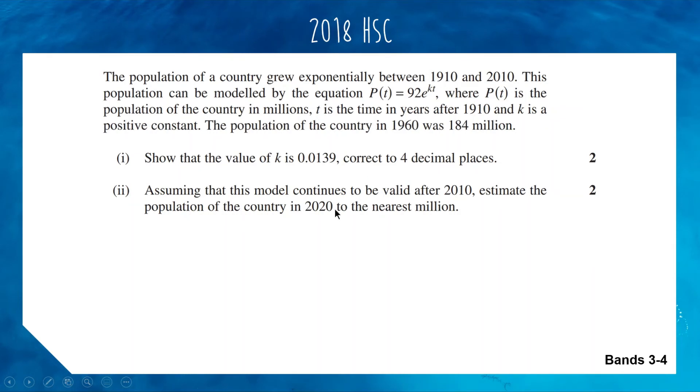We've got our function. We have 92 e to the, we have our value of k, and our value of t is going to be 110. Putting this through the Casio gets us an answer of 424.4. But remember, P is in millions, so this is really 424.4 million people. Question asked for nearest million, so we round it to 424 million people. For 2 marks, all you've got to do is use your answer from part 1, sub in a couple of values, and you've got your answer.